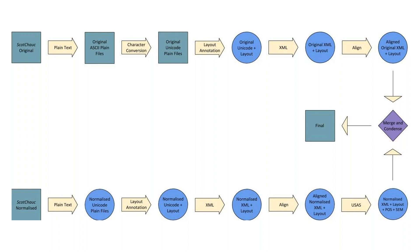I updated these files so that they matched the Eniados in their level of tagging, barring pragmatic annotation and alignment information. These files originally existed only in Unicode with two versions — those with original orthography and those normalized using VARD. I took both versions, added layout annotation, put them into XML, aligned the original with the normalized version, double-checked the normalization, ran the normalized files through the USAS tagger, and combined them with the originals to create files with layout annotation, normalized variants, and grammatical tagging.